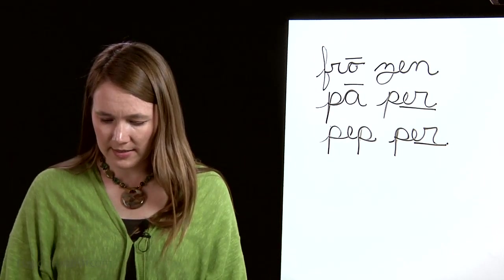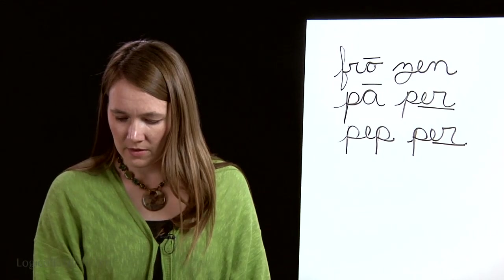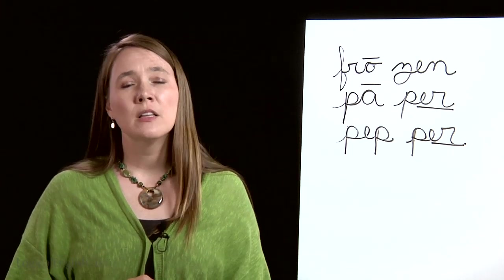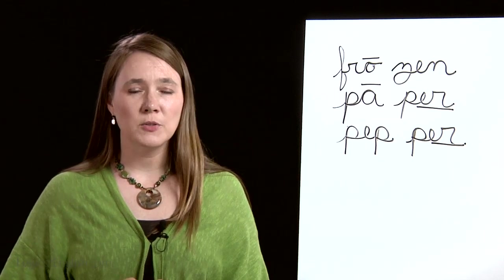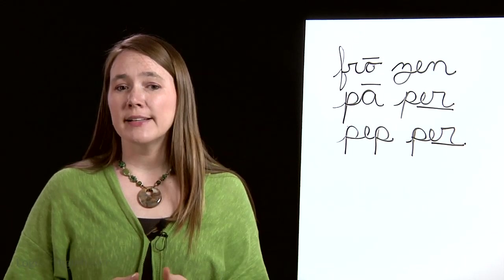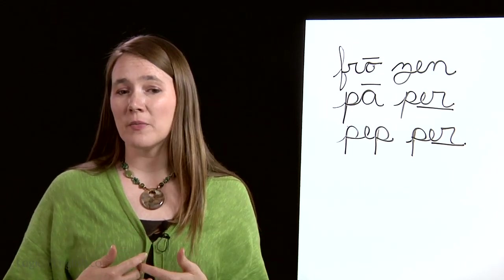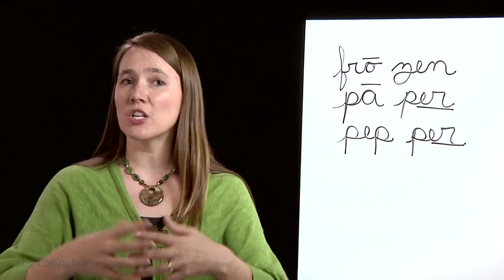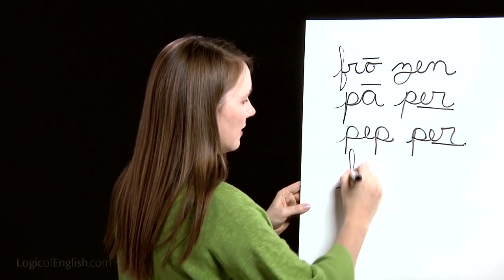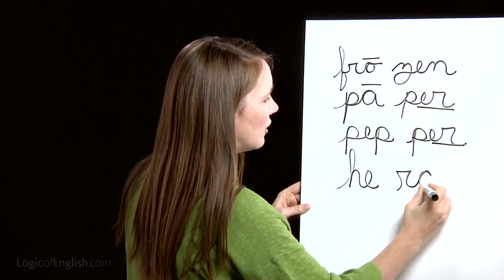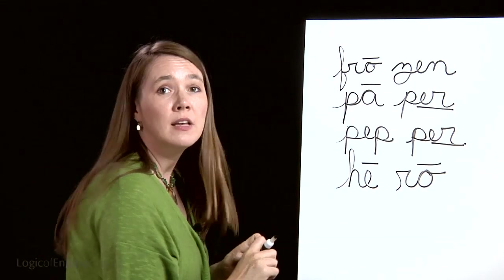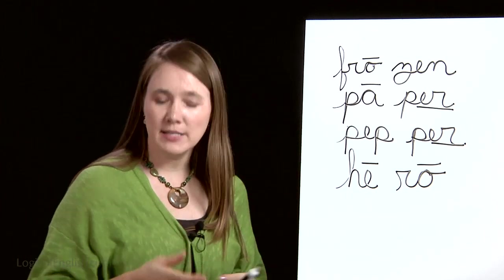The fourth word is 'hero.' The fireman who rescued her is a hero. Let's sound it out together: 'he,' 'ro.' The first syllable is 'he,' H-E. Second syllable is 'ro,' R-O. Go ahead and help me to write it: H-E, R-O. And how will we mark it? We'll put a line over the E and a line over the O. And why did the E and the O say their names? Because they're at the end of the syllable.